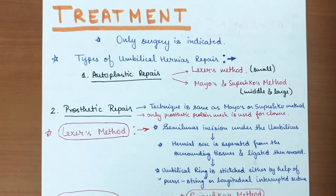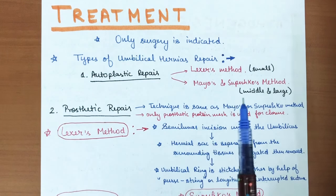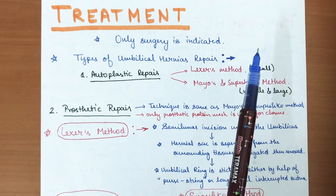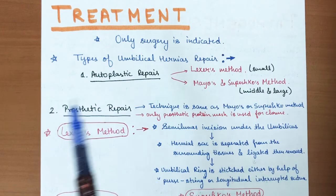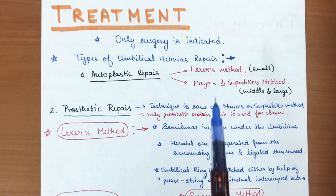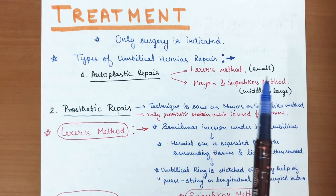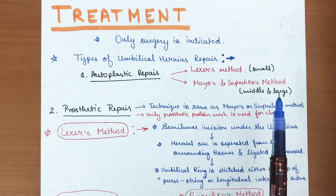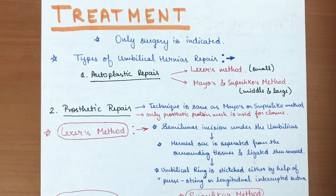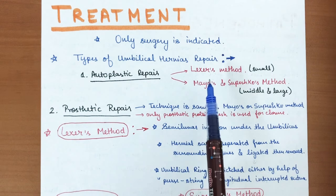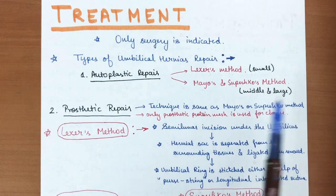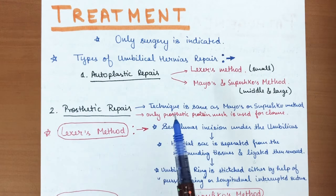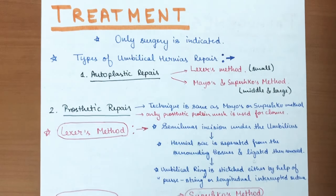Surgery is the only treatment indicated for adults with umbilical hernia. There are two main types of repair: autoplastic repair and prosthetic repair. Autoplastic repair uses two methods — the Lexer method for small hernias, and the Mayo-Spasokukotsky method for medium and large hernias. Prosthetic repair uses the same technique but with a prosthetic polypropylene mesh for closure instead of native tissue.